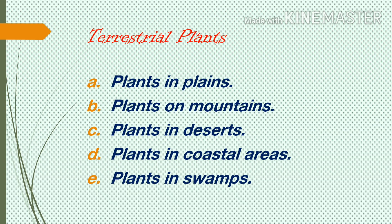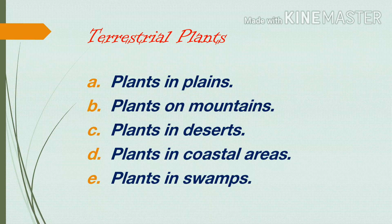Terrestrial plants. Let us discuss the various kinds of terrestrial plants. There are plants which grow in plain areas, plants which grow on mountain areas, plants in the desert region, plants in coastal areas, and plants in swamps. A terrestrial plant is a plant that grows on, in, or from land. Other types of plants are aquatic, which grow in water, epiphytic, which grow on trees, and lithophytic, which grow on rocks. Trees that grow on plains, mountains, and deserts are examples of terrestrial habitat.